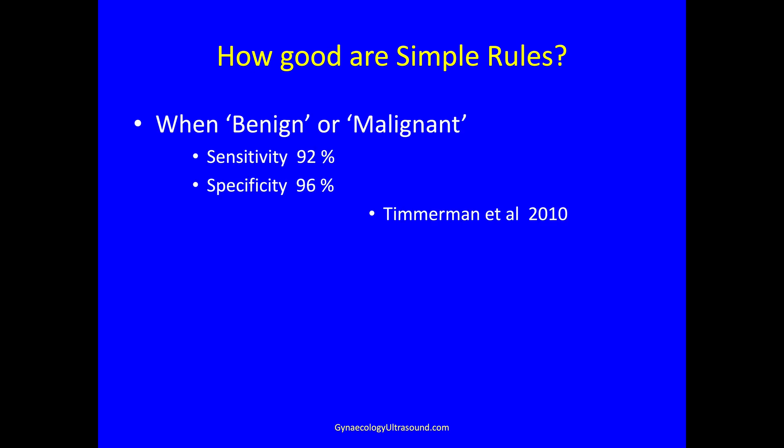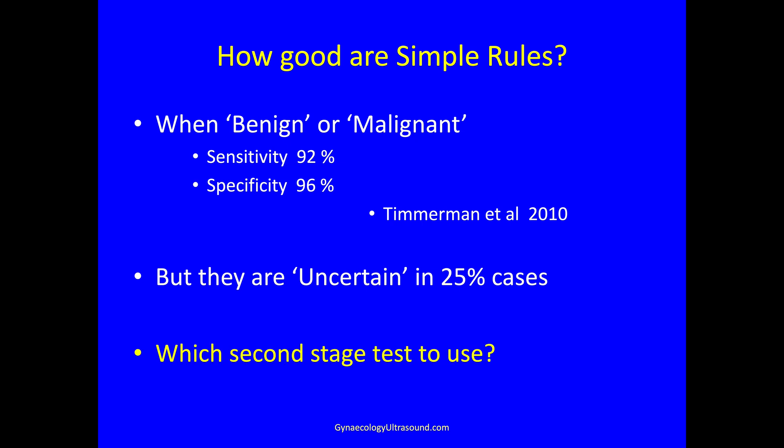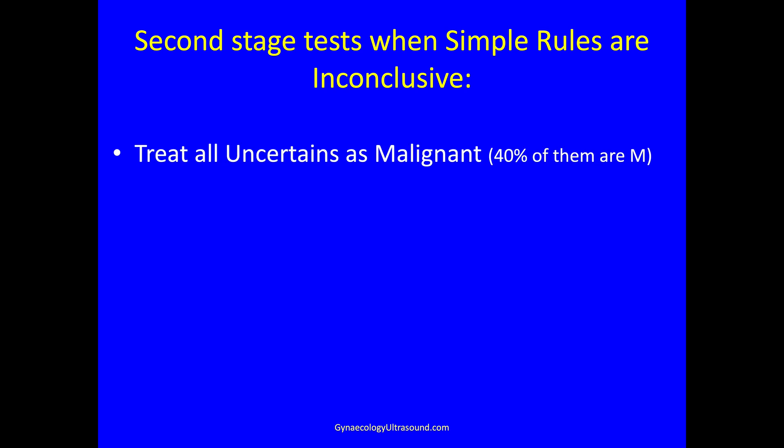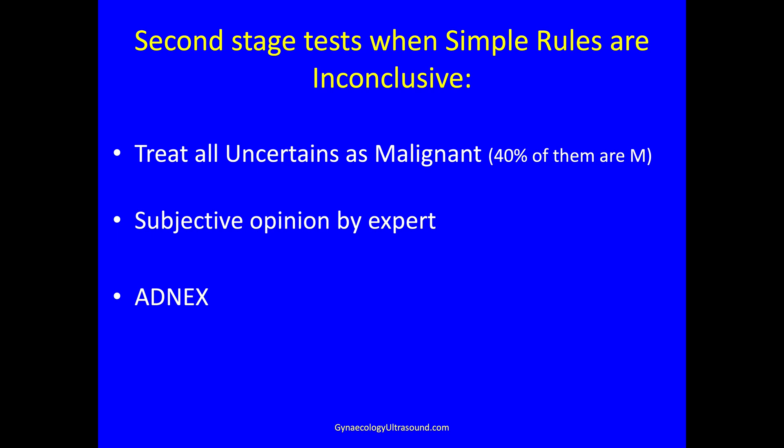So how good are the simple rules? If they say categorically it's benign or malignant, they have very high sensitivity and specificity. The issue is they're uncertain or inconclusive in 25% of cases. In those cases you can either treat all of these as malignant — because nearly half of them are — or you can have the person scanned again by an expert, or you can apply the ADNEX risk model.